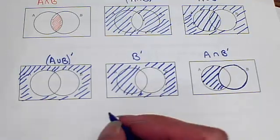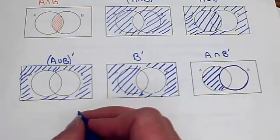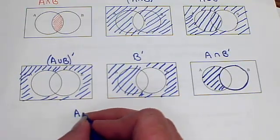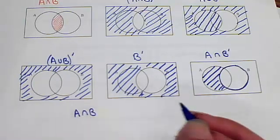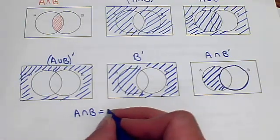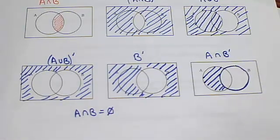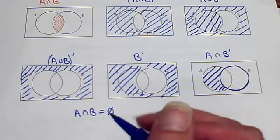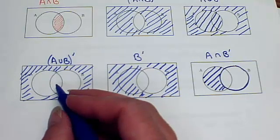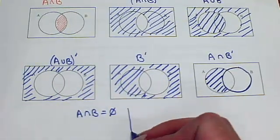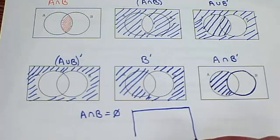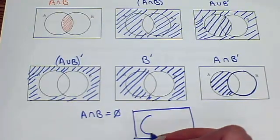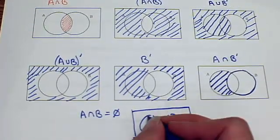Now, we talked about the null set a little bit, but we didn't really look at an example. What if I said that the intersection of my two sets was the empty set? What does that mean? Well, that means that if I put them together, try to find where they crisscross, there's nothing there. So what would that look like? That would mean that they're not touching.